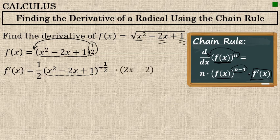Then we have to multiply by the derivative of x squared minus 2x plus 1, which is 2x minus 2. Term by term: the derivative of x squared is 2x, the derivative of negative 2x is minus 2, and the derivative of 1 is 0, which I won't write at all. This is the derivative: 1 half times x squared minus 2x plus 1 to the negative 1 half power times 2x minus 2, but there are some simplifications that can be made.